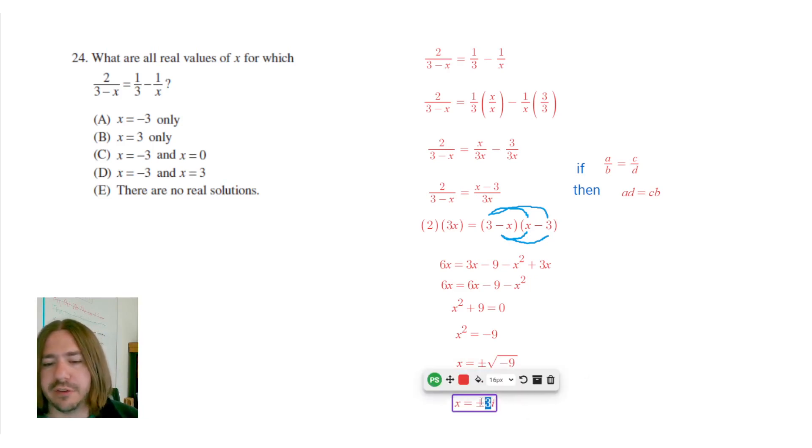Now, these are not real solutions. They are what we call imaginary or complex. And so that is going to be our answer here, is we actually get no real solutions. The only solutions we get are going to be these imaginary solutions. So that's it for 24. Thanks for watching, and I hope you all have a great day.